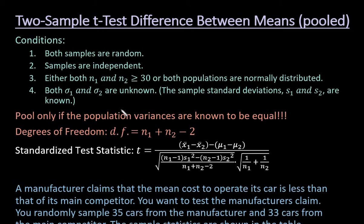In order to run the two-sample t-test, you do have to have random samples. You have to have samples that are independent of each other. And either both of your samples have to be greater than or equal to 30, or both of your populations have to be normally distributed. If you have smaller sample sizes, then the population does have to be normally distributed.